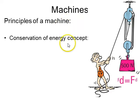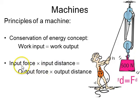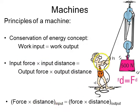So, the principles of a machine are based on the conservation of energy, which is that the work you input is going to be equal to the work that you output. That's if there's no losses. So, if you look at work in terms of force times distance, the input force times the input distance equals the output force times the output distance. And here's an example of a big pulley system.